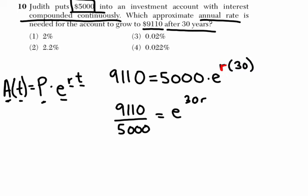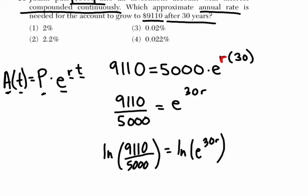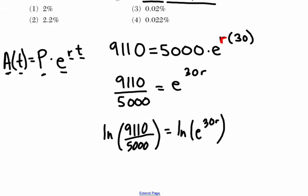And then I'm going to take the natural log of both sides. And the natural log of the left-hand side here is the natural log of $9,110 over $5,000. That's going to be some number. And then the natural log of E to the 30R, that's just 30R, right?